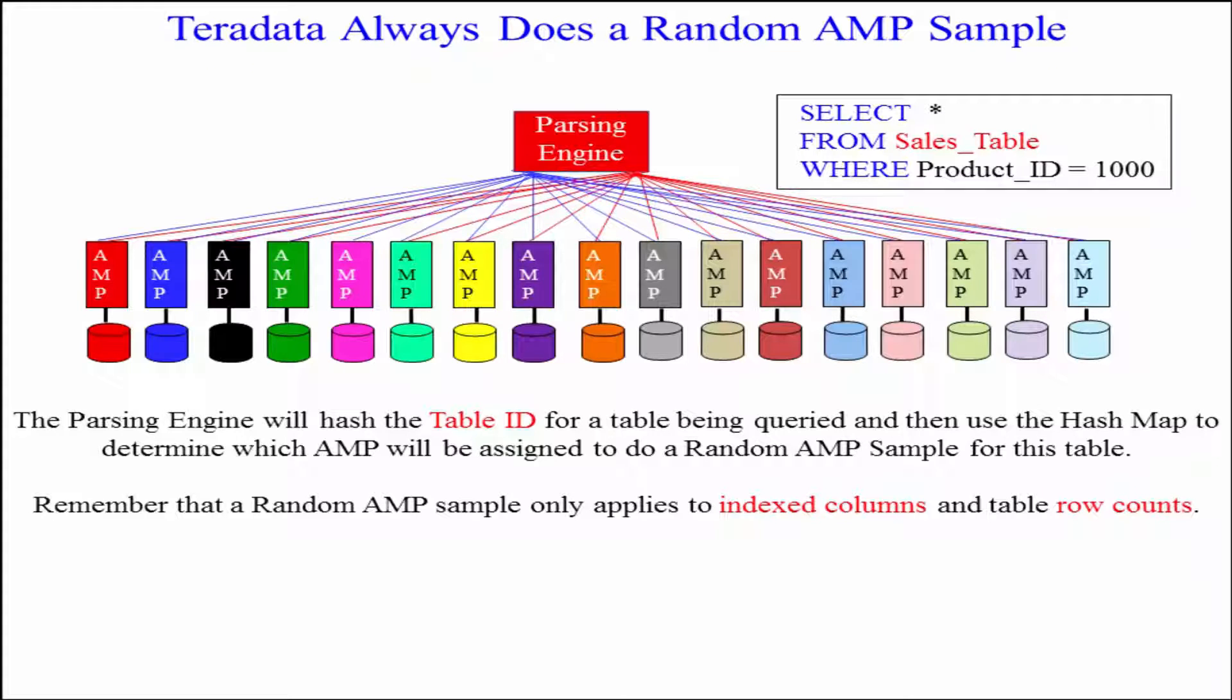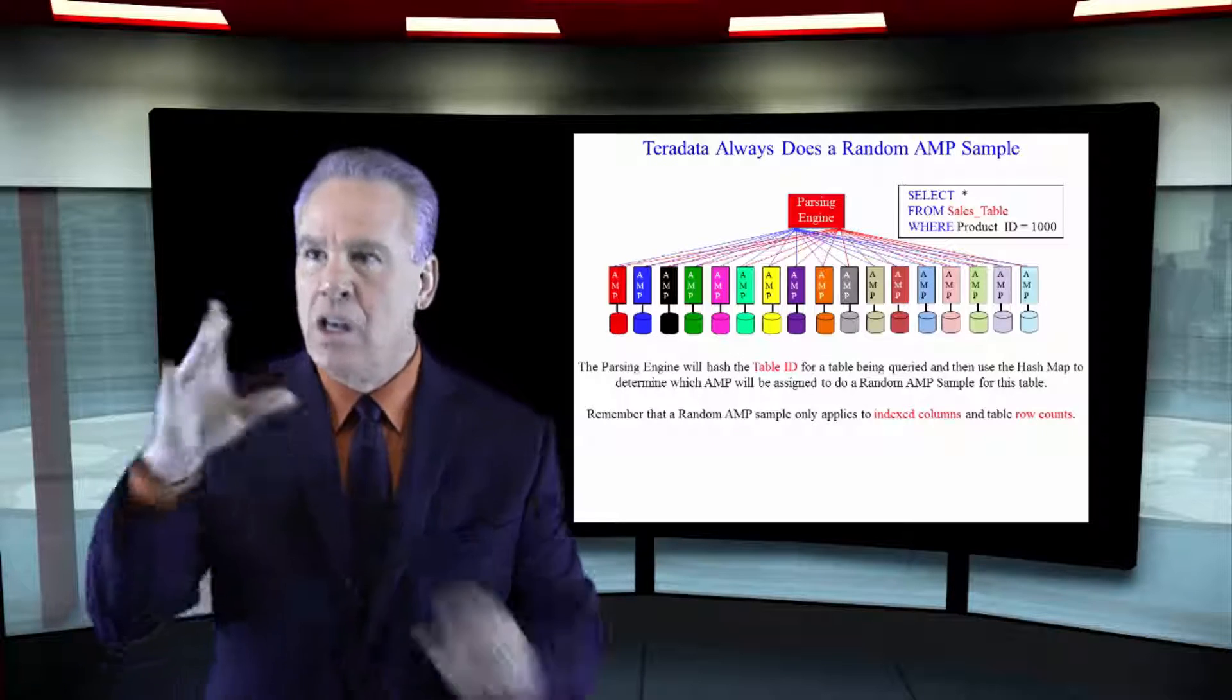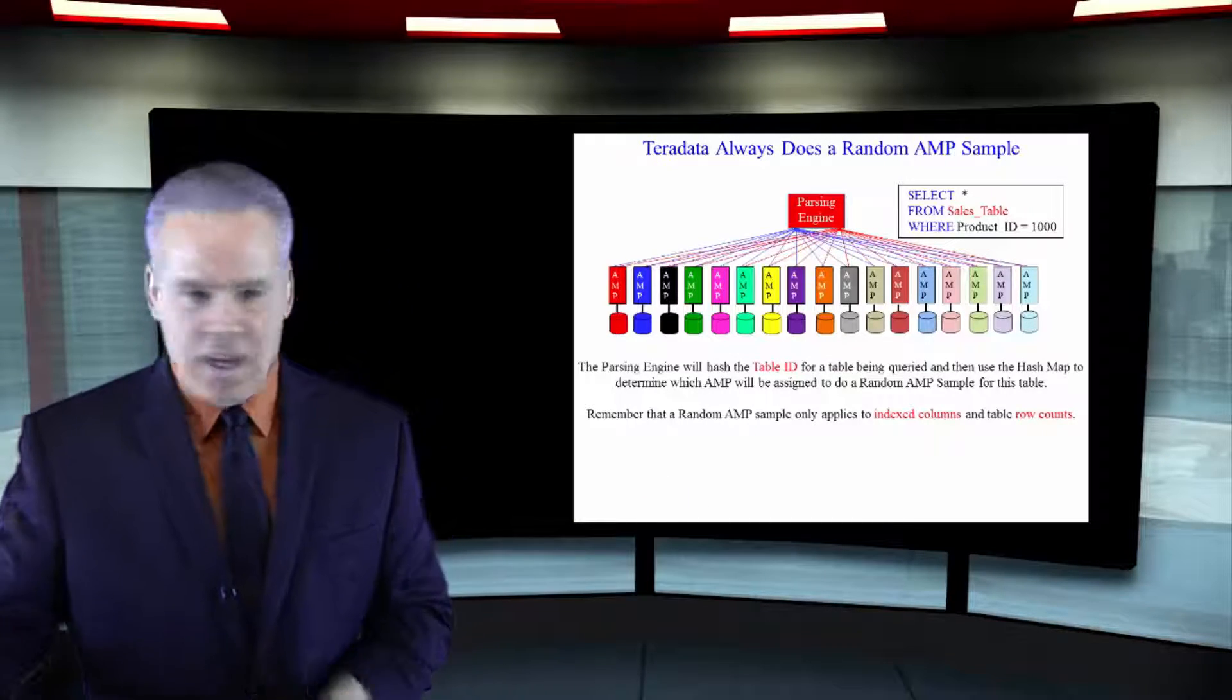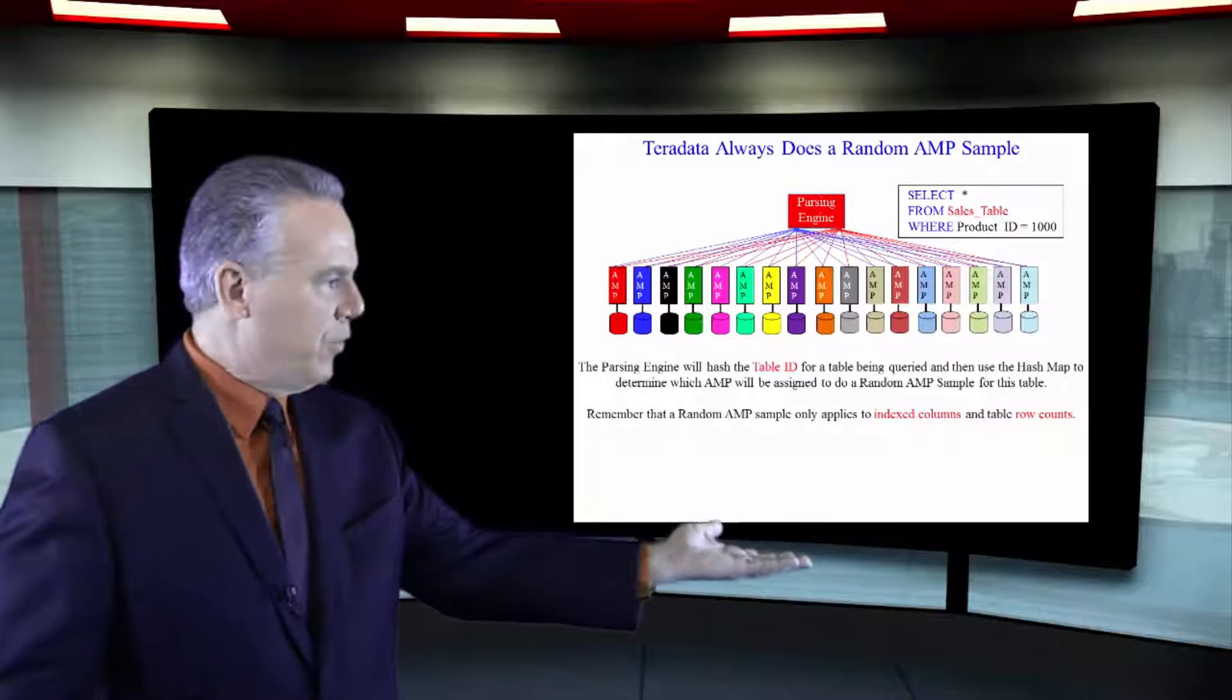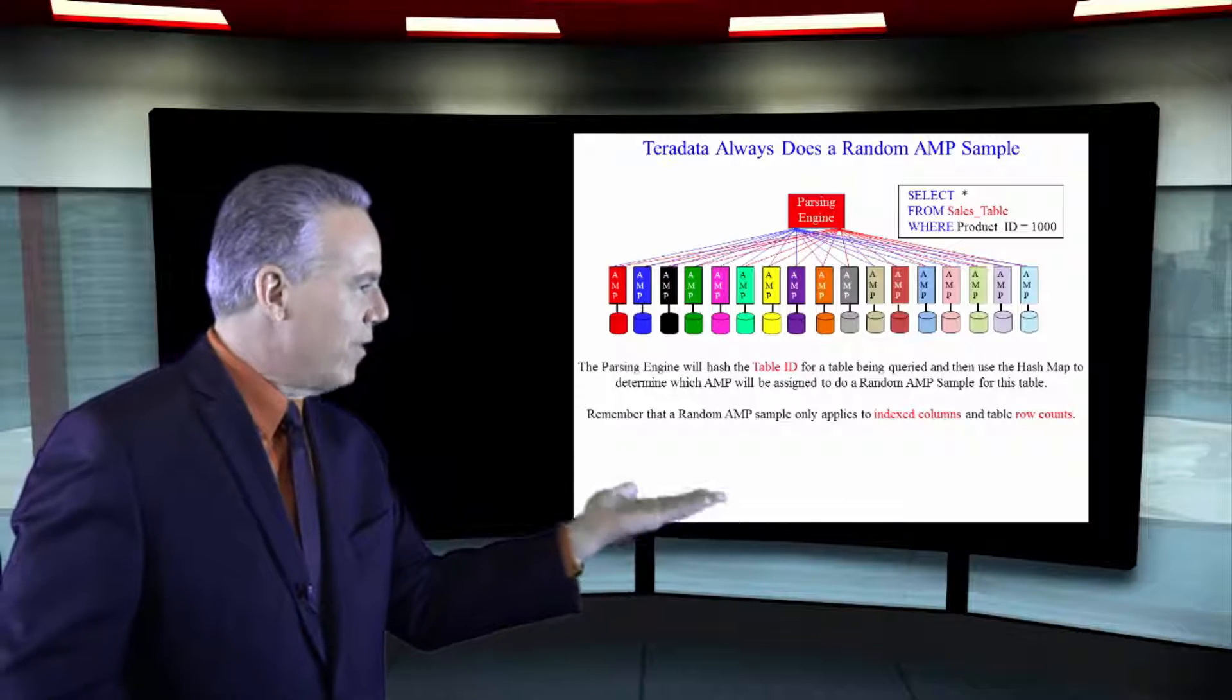How do they pick which AMP? Well they say, let's take the table name, sales table, hash it, get a row hash, go to the map. Oh, which AMP's the bucket say it's in? It's on AMP two. AMP two, you're responsible for the random AMP sample of sales table every time.